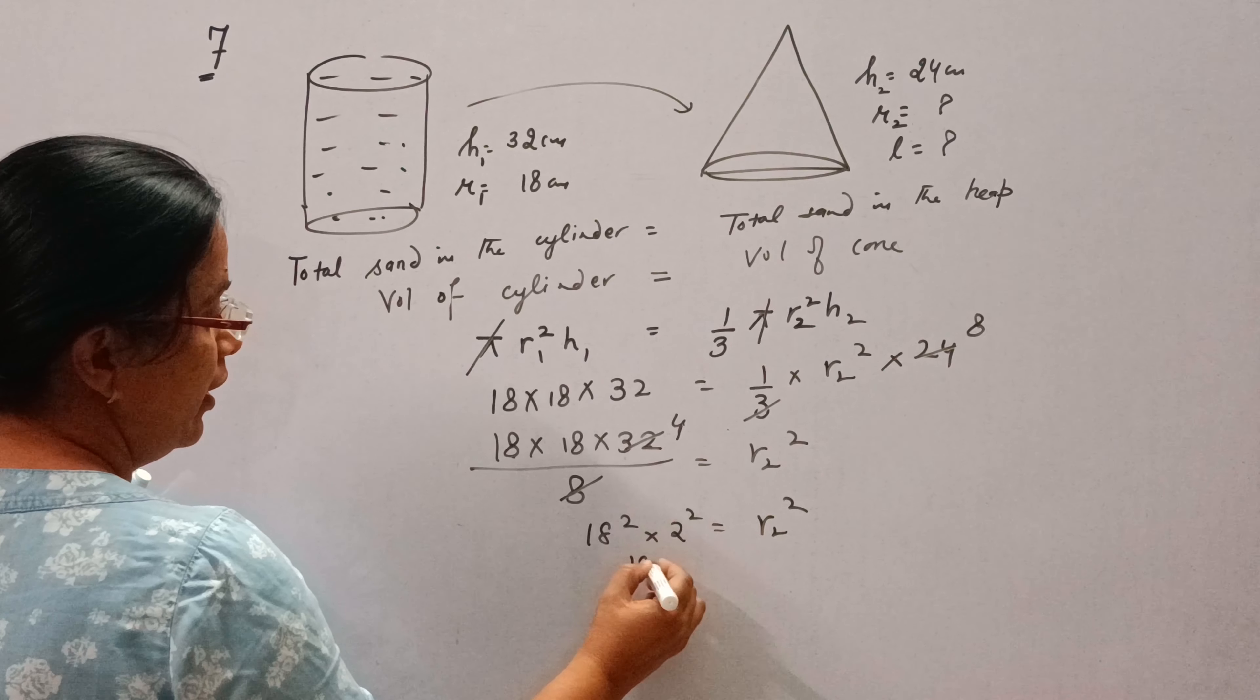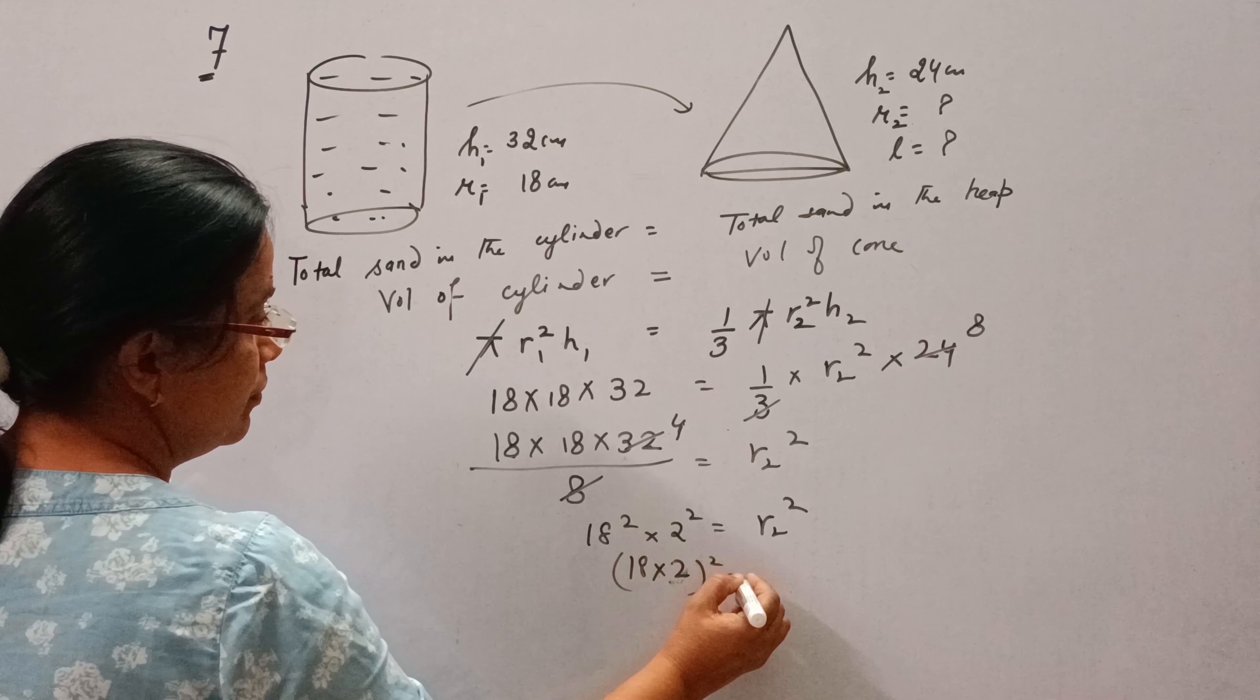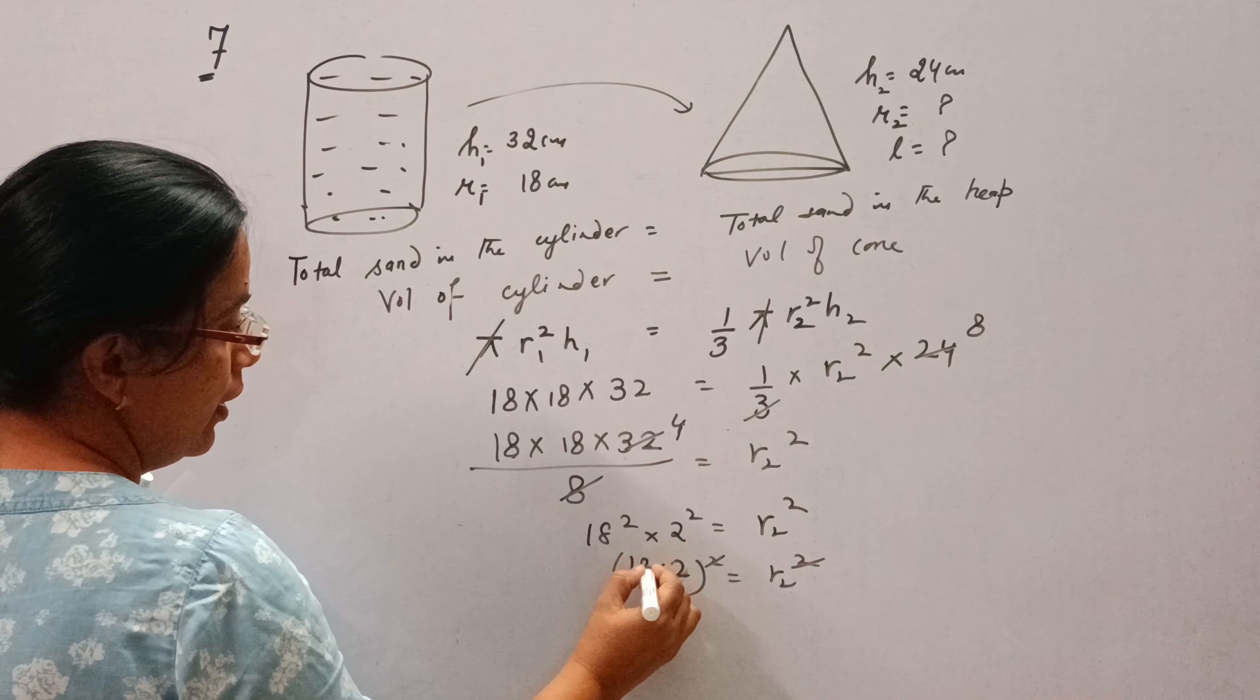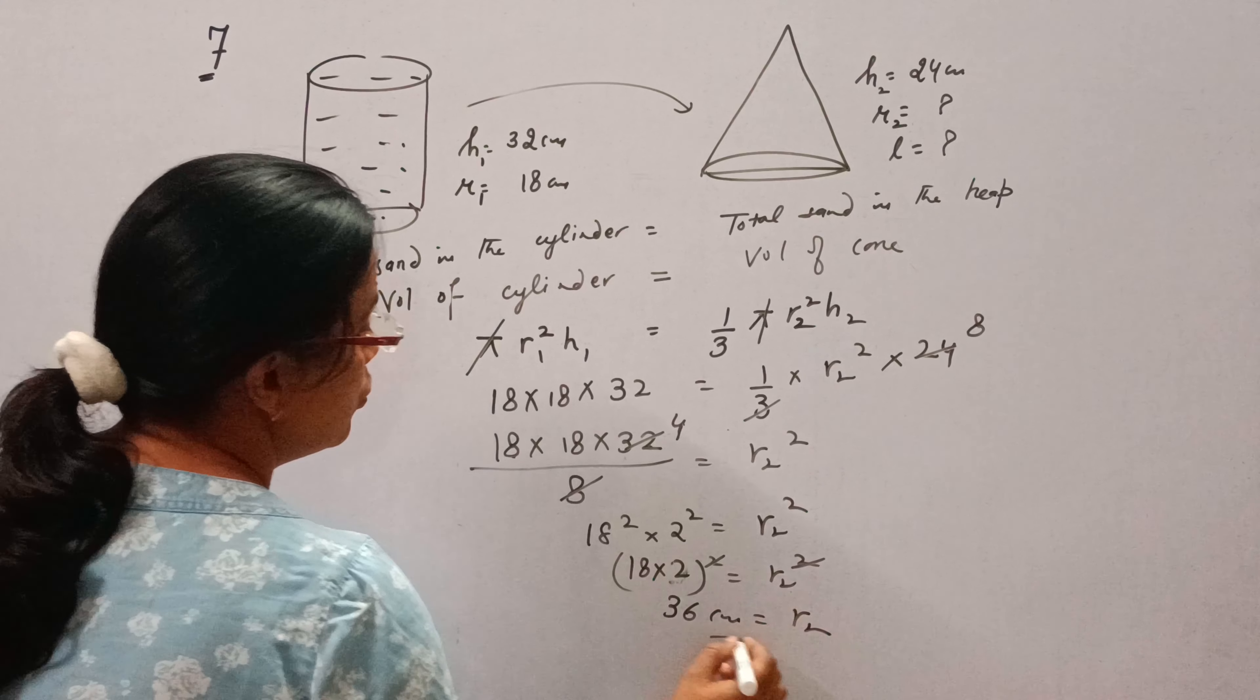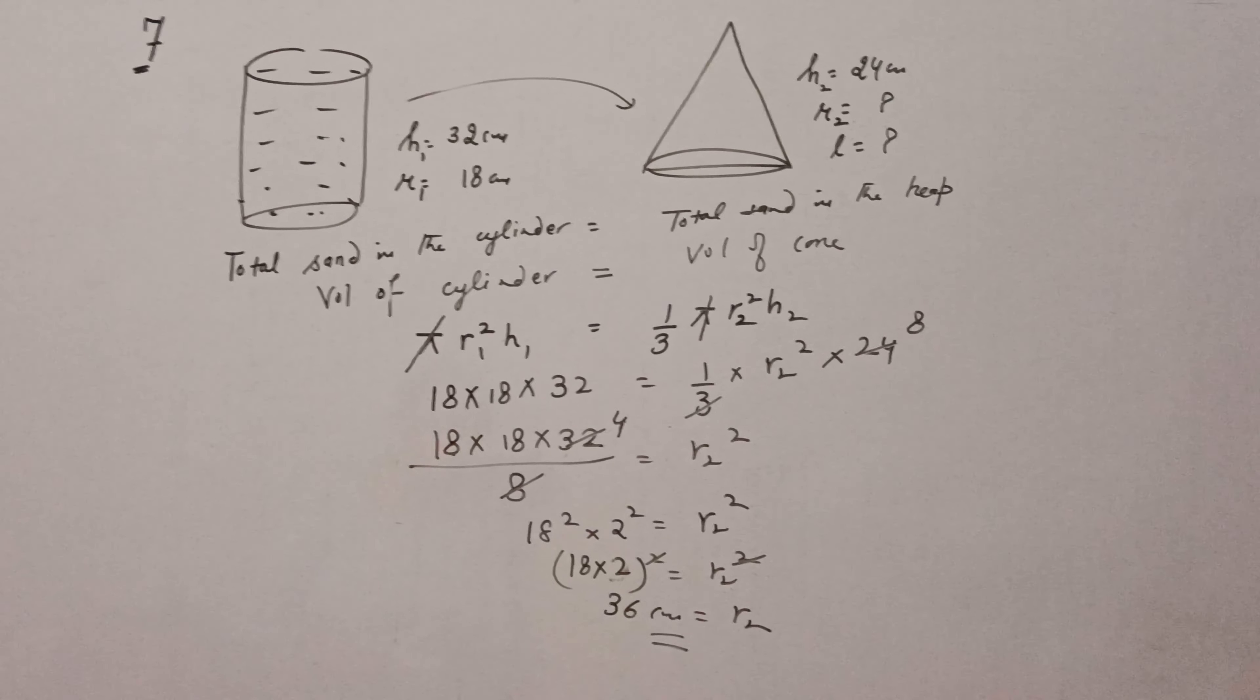Now this is 8 square of 18 and 4 is the square of 2. So we can write 18 into 2 whole square. We will cut square by square. 18 into 2 is 36. So radius of this conical heap is 36 centimeter.